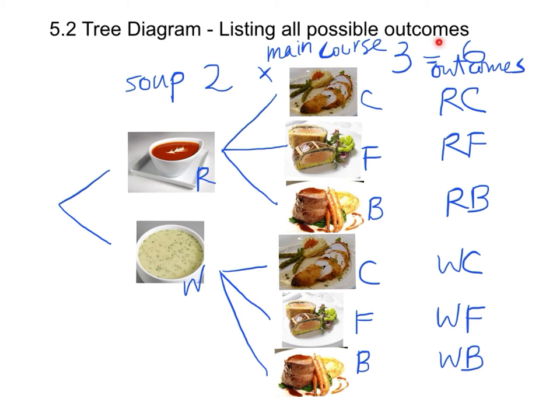We can always find the total number of possible outcomes by multiplying the number of choices in each item. In the soup item we have two choices, in the main course we have three choices. We call this the Law of Multiplication. The total number of outcomes will always be the product of the number of choices in each item. After watching this video, this menu may make you feel a bit hungry.